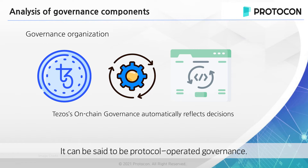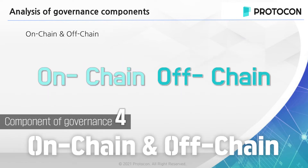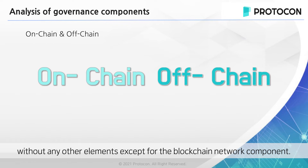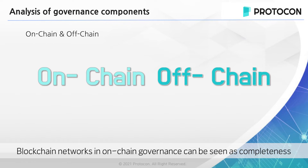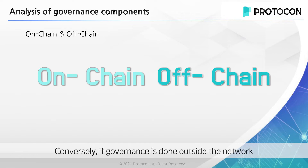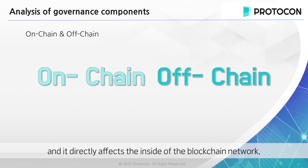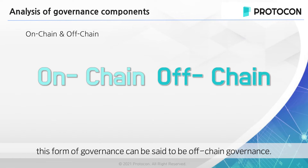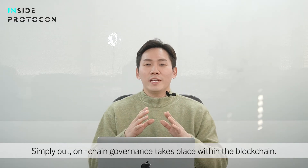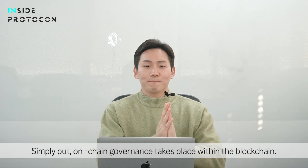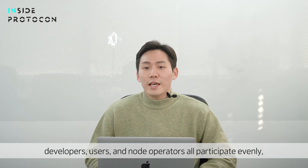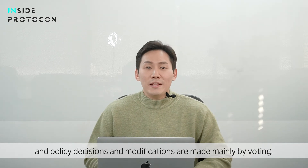It can be said to be a protocol-operated governance. On-chain governance refers to a form in which governance can be achieved inside a chain without any other elements except for the blockchain network components. Blockchain networks in on-chain governance can be seen as complete and independent. In on-chain governance, developers, users, and node operators all participate evenly, and policy decisions and modifications are made mainly by voting.